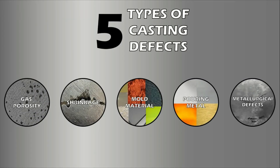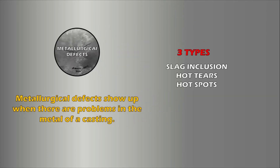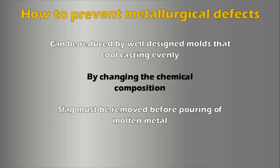The last main casting defect category is metallurgical casting defects. These show up when there are problems in the metal of a casting, and there are three types: slag inclusion, hot tears, and hot spots. Metallurgical defects can be greatly reduced by using well-designed molds that evenly cool the casting and deform the proper way in hot conditions. Changing the chemical composition may help to solve the problem, and slag must be removed before pouring of molten metal.